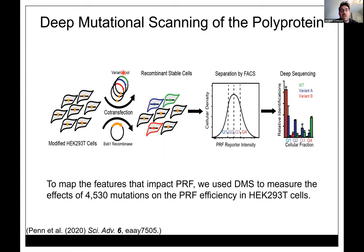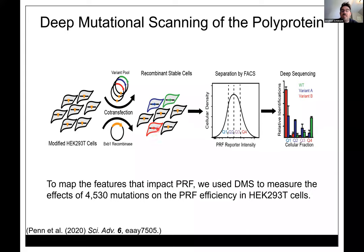We took a plasmid with our frameshift reporter cassette programmed with about 7,000 mutations spanning from before the slippery sequence through the slippery sequence and downstream RNA structure. We transfected these into cells with the BxB1 recombinase, which installs one copy of the plasmid per cell next to an inducible reporter. The result is a mixed recombinant stable cell line where every cell expresses a different variant from a common genomic locus. We then run cells through a fluorescence-activated cell sorter to separate based on frameshift signal intensity.